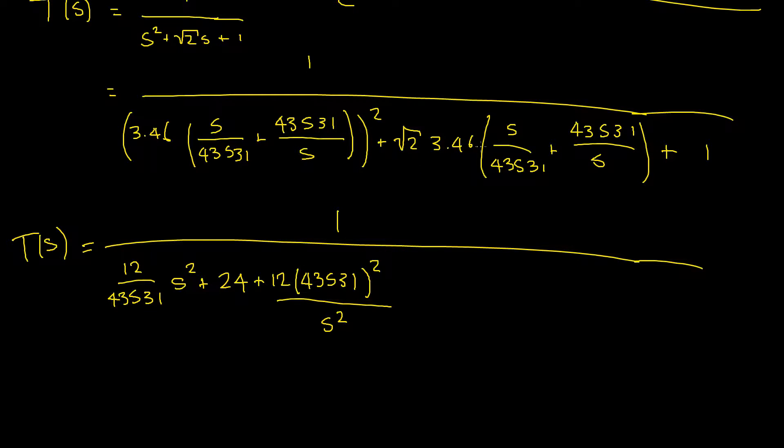Now we can easily distribute this over the brackets plus 4.89 and that's simply multiplying the square root of 2 by 3.46 divided by 43,531. And then all of that is multiplied by S plus, and then distributing our 4.89 times 43,531 gives us 213,280 divided by S plus 1.